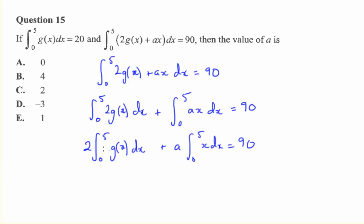Well we know the value of this. They gave us the value of this up here. We know that's 20. So 2 times 20 gives us 40.